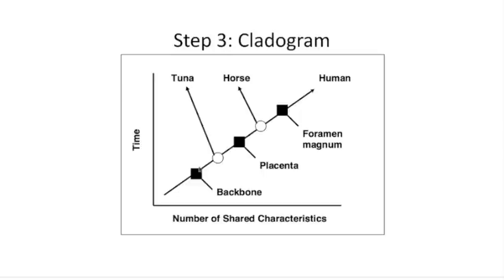Once you've done that, you can draw the cladogram. The oldest organism comes in the first clade, and they go in order until the most complex or most recently evolved organism comes last. Draw the clades going off in one direction and place the characteristics in between each clade that separates it from the other organisms.